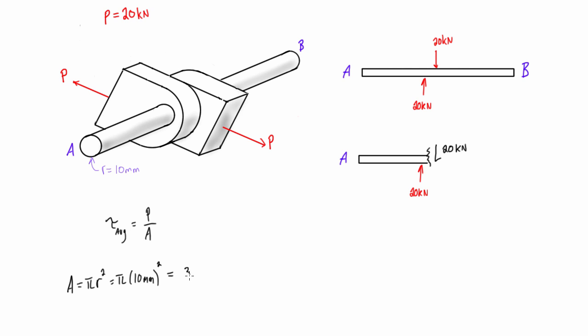So when we go to calculate our average shearing force in the cross-section here, we just have 20 kilonewtons over 314.16 millimeters squared, and that's going to give us a value of 0.0637 kilonewtons per millimeter squared. Now again, if you remember from the last video, this is kind of a weird unit to look at.